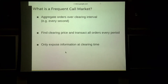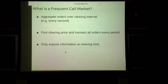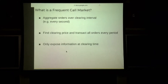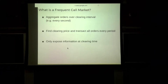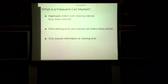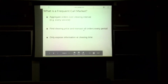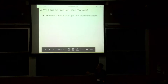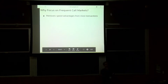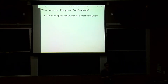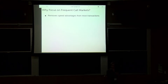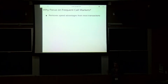These frequent call markets only expose information over the course of a clearing interval. So why should we focus on these clearing markets as opposed to other techniques that might also solve latency arbitrage, like taxing cancels or other ways to prevent this predatory behavior?